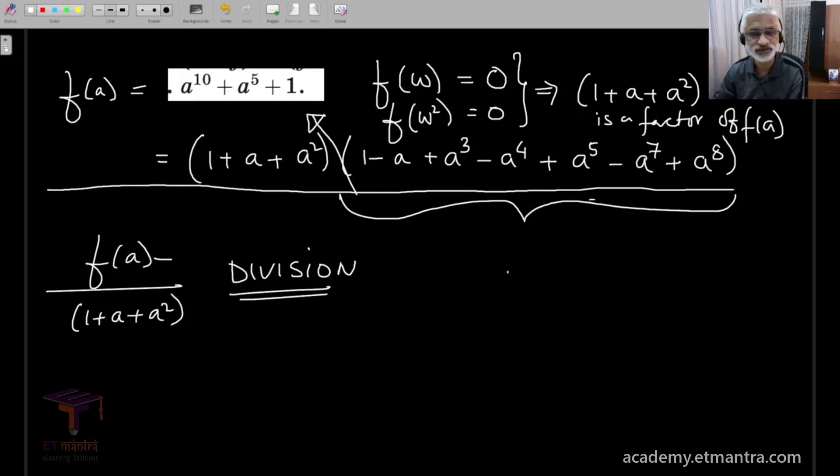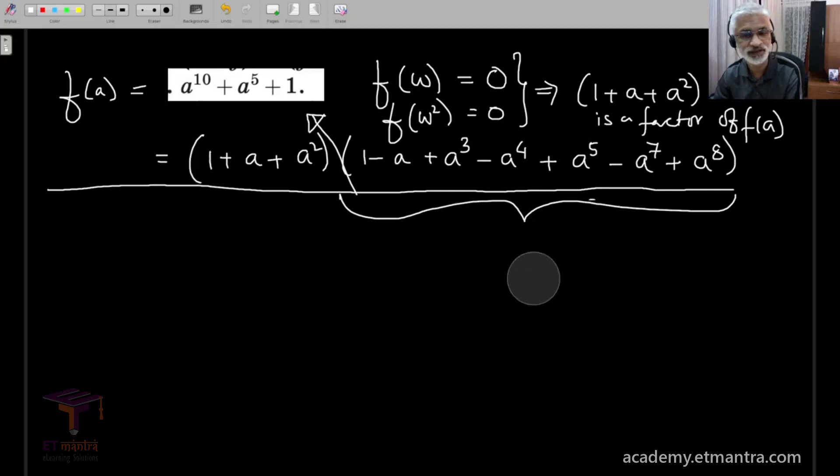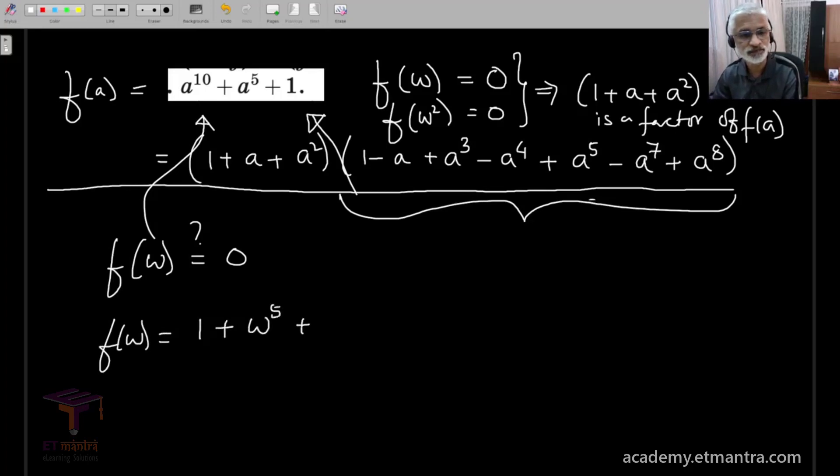So, all that remains now is to verify that omega and omega square are definitely roots of this equation. Let me just try to write down why would f omega be equal to 0. So, let's substitute omega into the polynomial. f omega is equal to 1 plus omega raised to 5 plus omega raised to 10, which is the same as 1 plus omega square plus omega. And this is, of course, 0 as its standard identity.